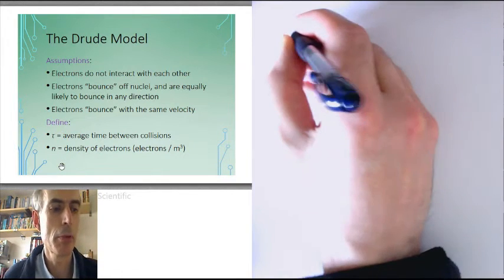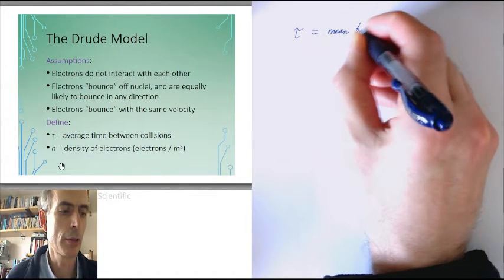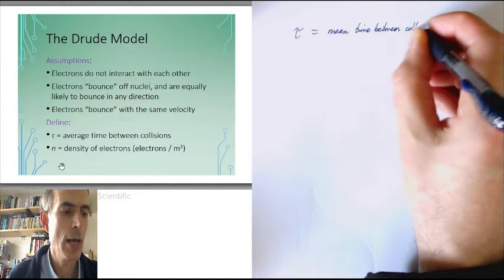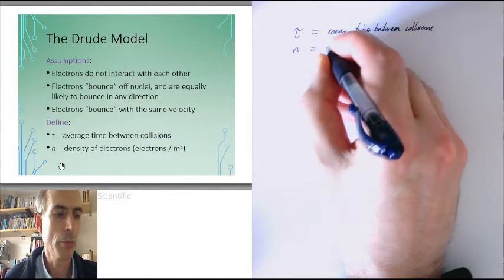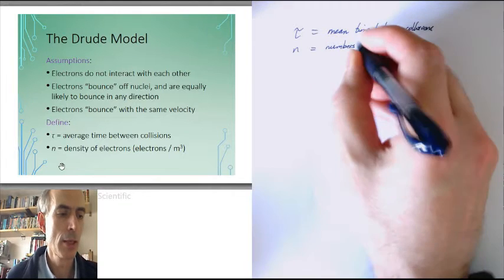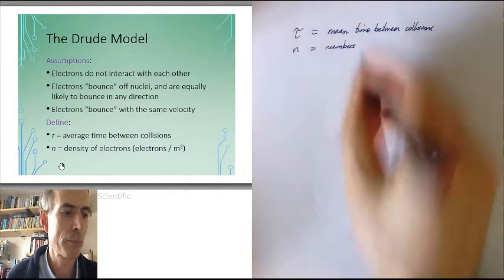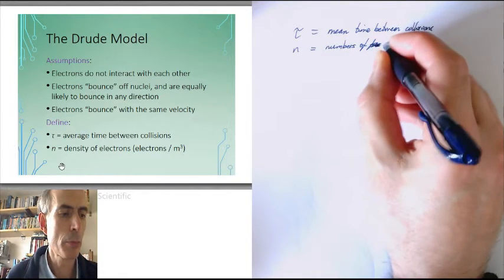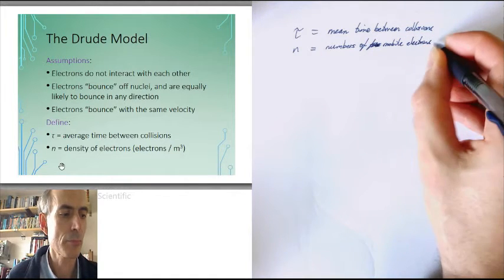τ is the average time between collisions. That's the mean time between collisions. And n is the density of electrons, the number of electrons per cubic meter. Not total number of electrons, but the number of free electrons, the ones in the conduction band which are able to move around. Maybe I'll call them number of mobile electrons per cubic meter.